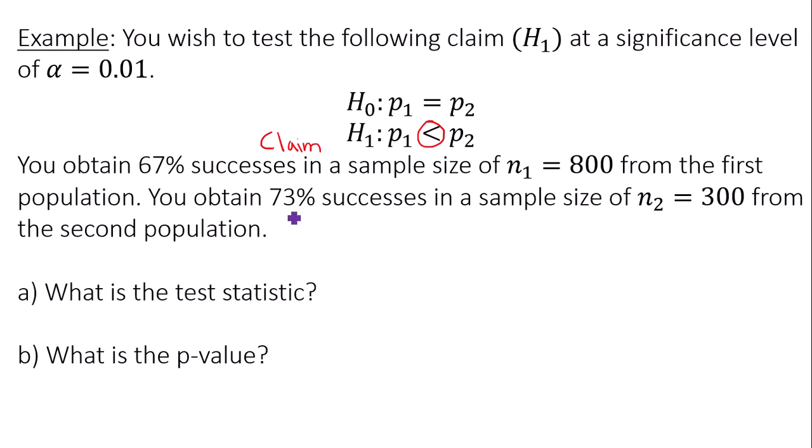If they gave you the percentage successes, then the number of successes, which is x, is equal to the sample size times the percent of successes. That's how you find the number of successes.